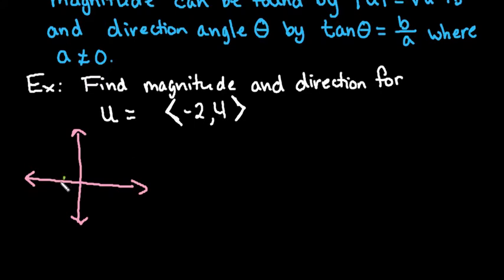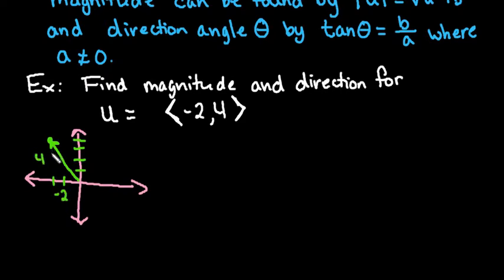So negative 2, 4 — that means that I would go left 2 and up 4. When you are given a vector, this part just tells you where the vector ends; it's the terminal point of your vector, which is kind of like a ray because it's in a certain direction. So this is vector u, where this side is negative 2 and this side is 4. You can see that we have our right triangle here, and we can find our reference angle to help us find theta — the angle measuring from the x-axis until the terminal side.